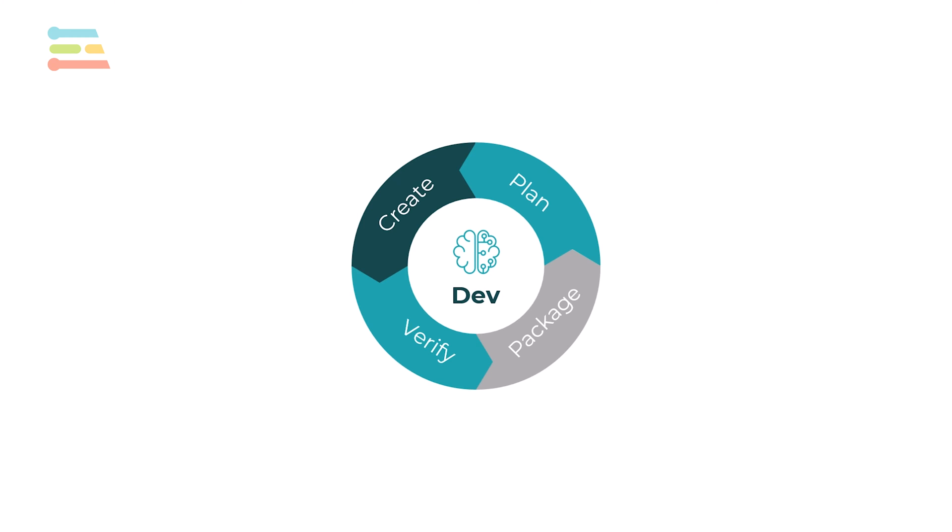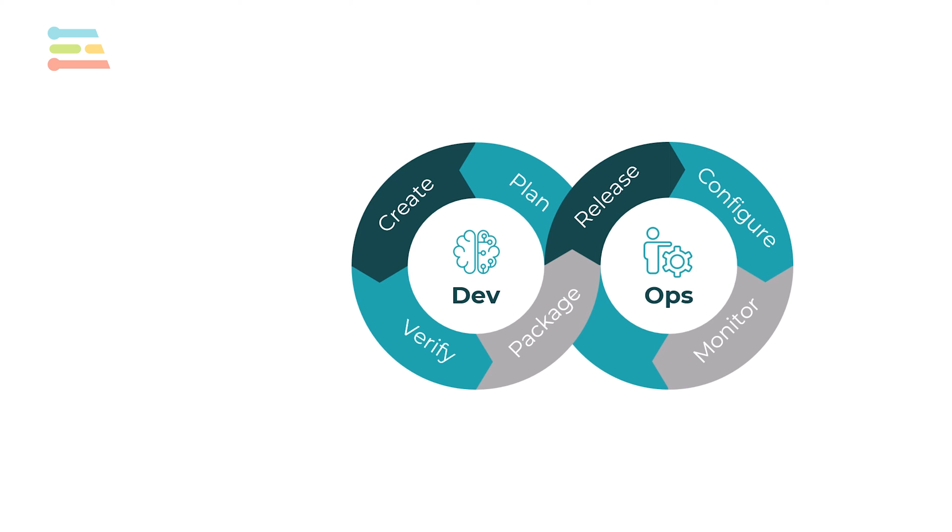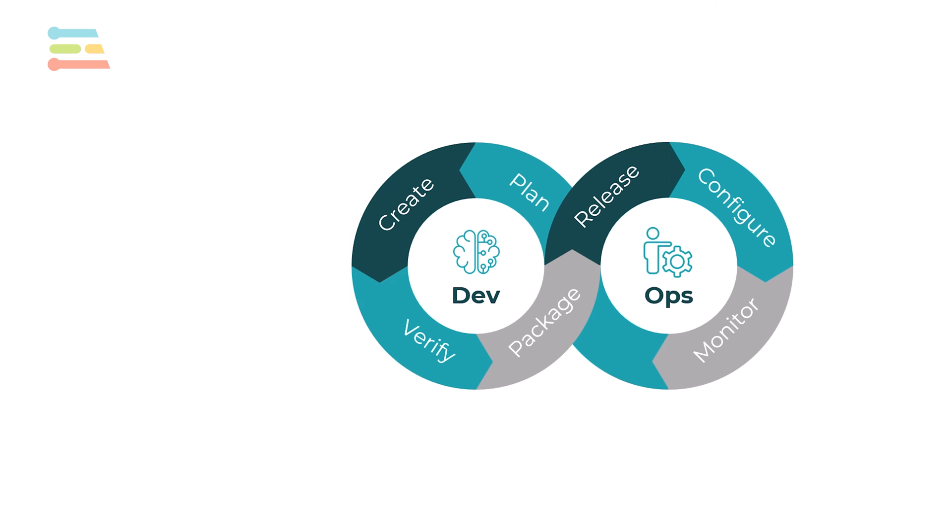DevOps is a combination of software development and IT operations. It includes the practices and techniques to automate various development processes and to encourage collaboration between the development and operations teams. Machine learning adds more to the mix, as it includes data gathering, analysis, and processing, as well as model training, deployment, and monitoring.